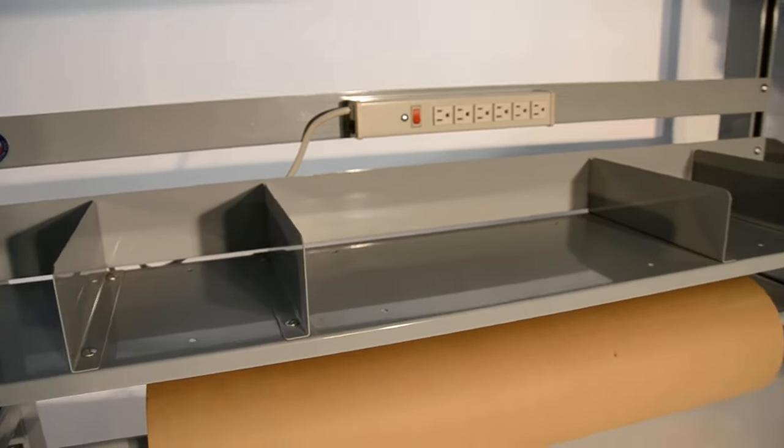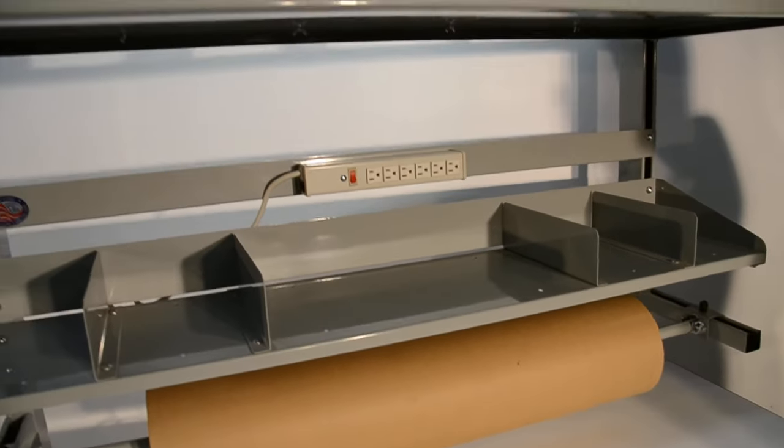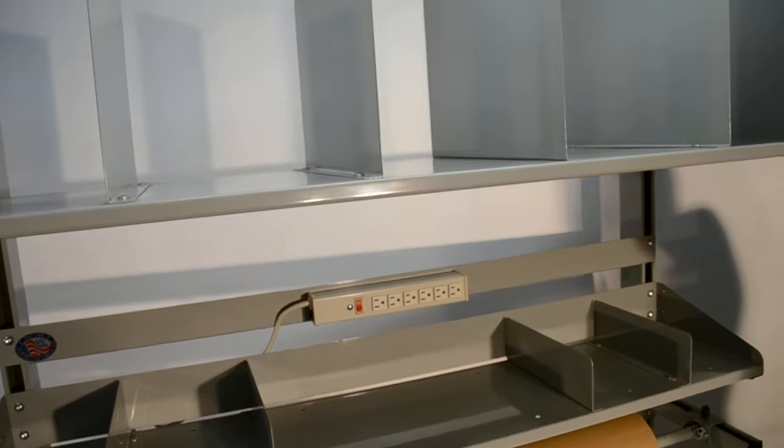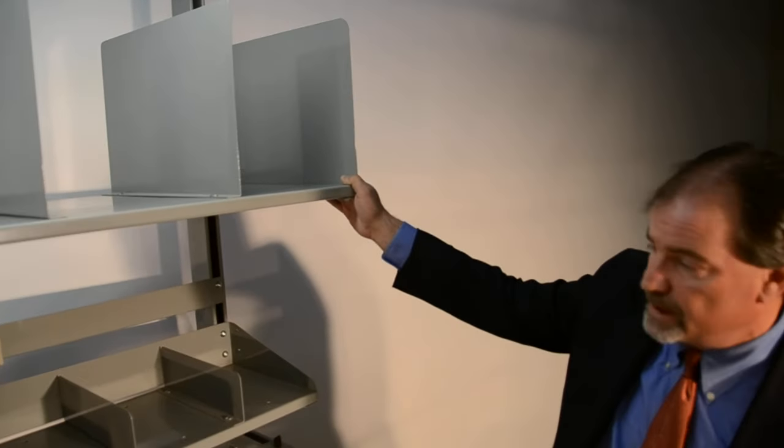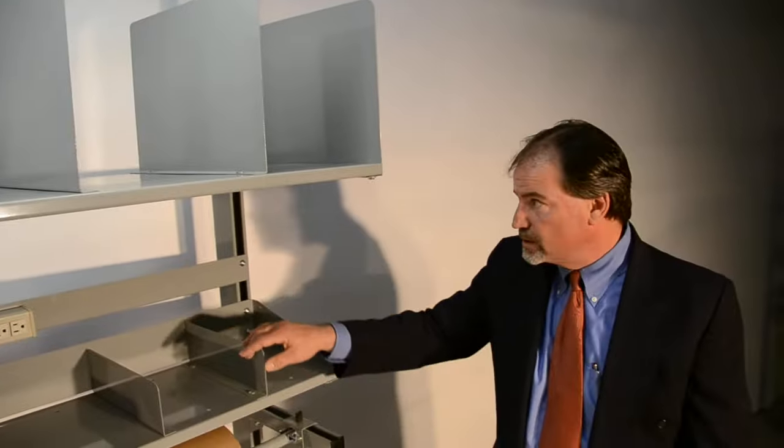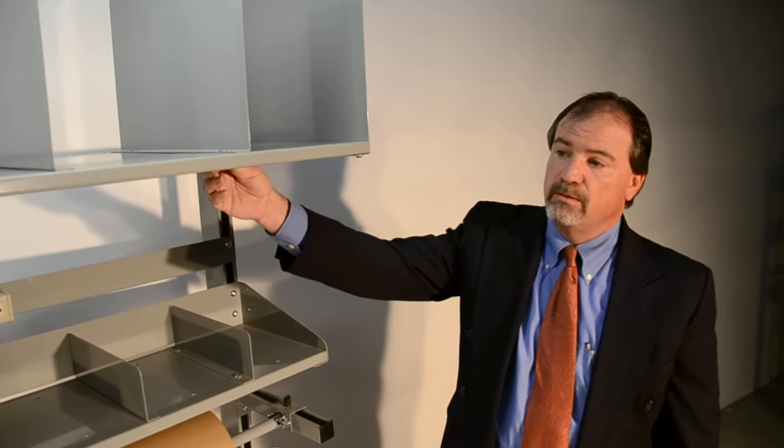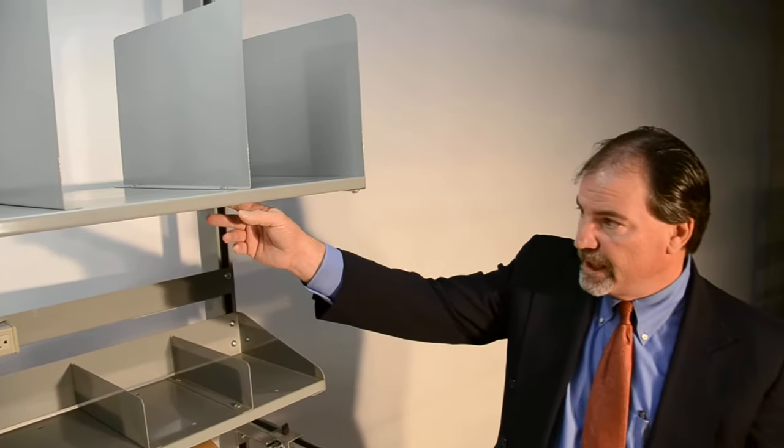In addition to that, we also have the corrugated storage shelf. This is 18-inches deep. The dividers are 12-inch by 18. And like the smaller dividers, they do also adjust or bolt in with an acorn nut, so you don't need tools in order to adjust it.